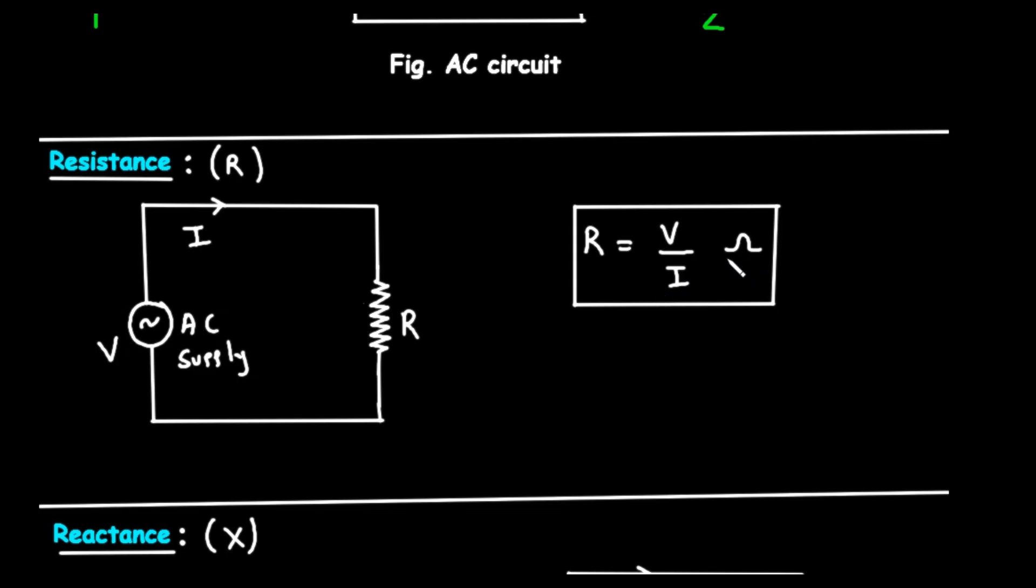The unit of resistance is the Ohm, represented by the Greek letter Omega. For a resistor, this opposition is the same whether you use an AC or a DC supply. It doesn't depend on the frequency of the current.